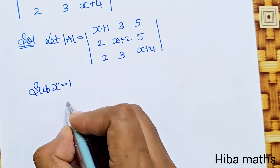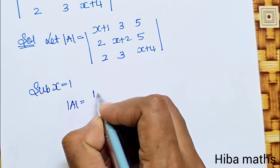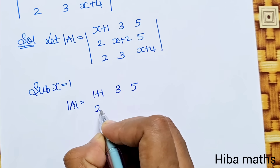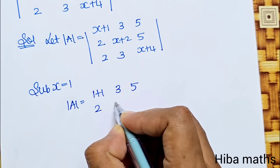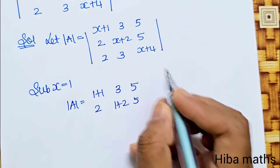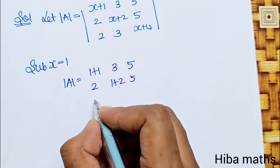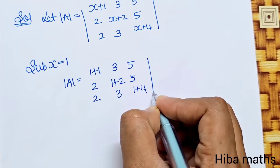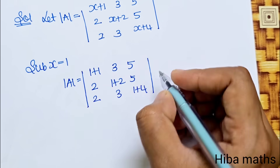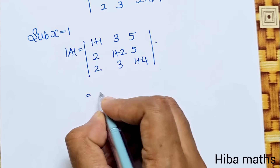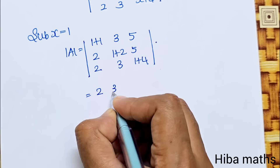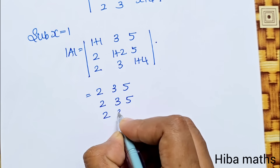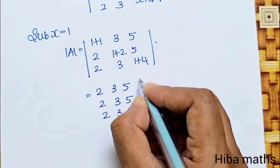Now, substituting x=1 into the matrix, we get rows (1+1, 3, 5), (2, 1+2, 5), (2, 3, 1+4), which gives rows (2, 3, 5), (2, 3, 5), (2, 3, 5).